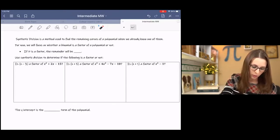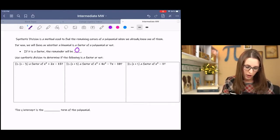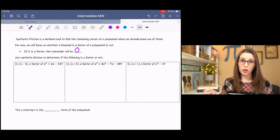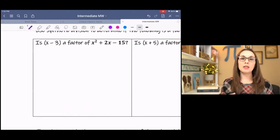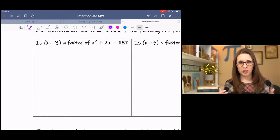If it's a factor, the remainder is zero. We have, use synthetic division to determine if the following is a factor or not. In this first example, I have x minus 3. Is x minus 3 a factor of x squared plus 2x minus 15. Now this is a simple quadratic, so we could probably just factor this, but I want to use it to show you synthetic division.